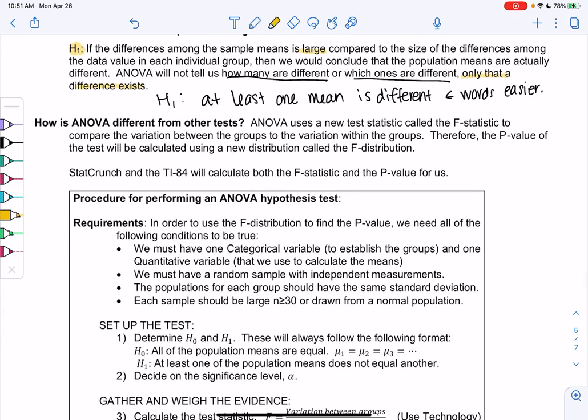A lot of vocab, don't worry. When we get into an example, you'll realize you don't necessarily need to know all this information. So it's going to use a new curve called the F-curve or the F-statistic. Don't worry, StatCrunch or our TI-84 can calculate this. Our P-value is still a P-value, but we're using this new thing called an F-curve. But StatCrunch and our calculator will find both of those for us.